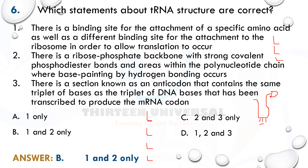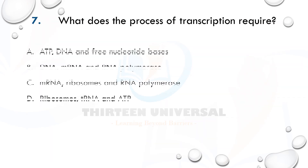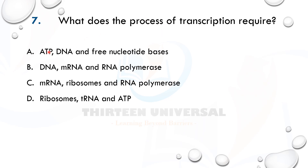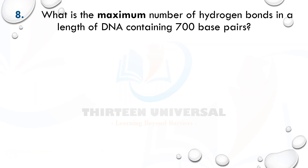Question seven: what does the process of transcription require? During transcription, ATP is needed to activate or phosphorylate free RNA nucleotides. A template strand of DNA is also needed, and free RNA nucleotides act as building blocks. In transcription we are synthesizing messenger RNA in the nucleus — messenger RNA is not needed as an input, transfer RNA is not needed, and it does not occur at ribosomes. So the answer is A.